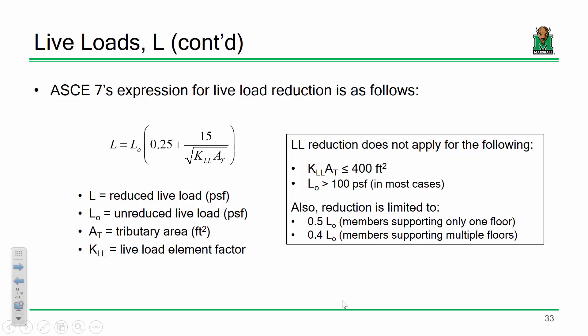A couple other things: this is an empirical relationship, and because equations can give weird answers with weird input values, there are additional limits. If a member only supports one floor of load, the reduction is limited to 50%. So if 80 psf gets reduced to 12 by the equation, the spec says no — it's limited to 40 psf. You can't go below 40. For members supporting multiple floors, the limit is 0.4L₀.